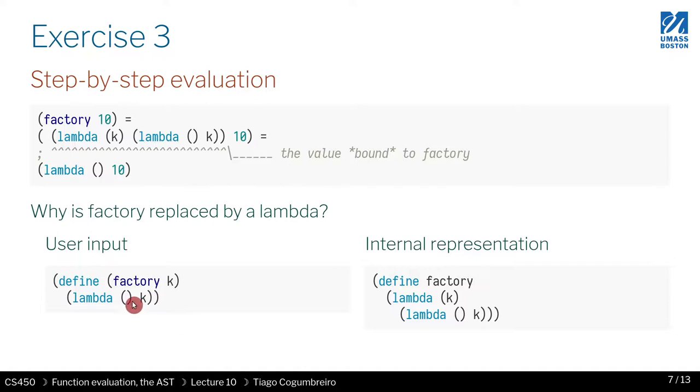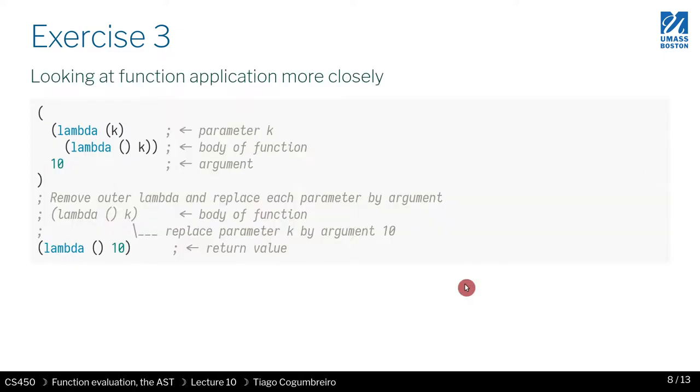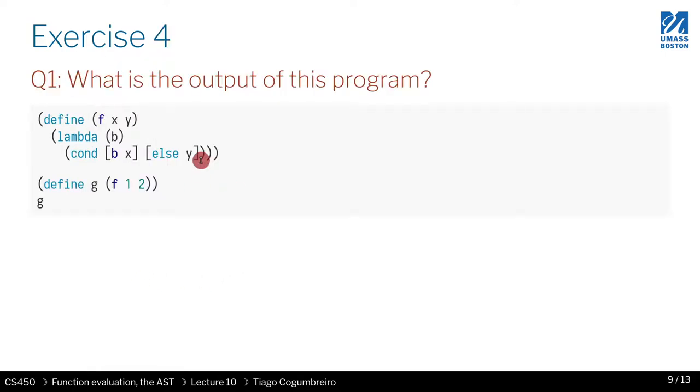And here is explaining why we replaced, just recapping, why we replace factory by this lambda. Because left hand side is equivalent to right hand side. Here is just more a spelled out explanation of what's going on, where k is the parameter, this is the body, and this is the argument. We're replacing k by 10. This whole thing is the body of the function. This is why we get the value. Nothing too complicated.